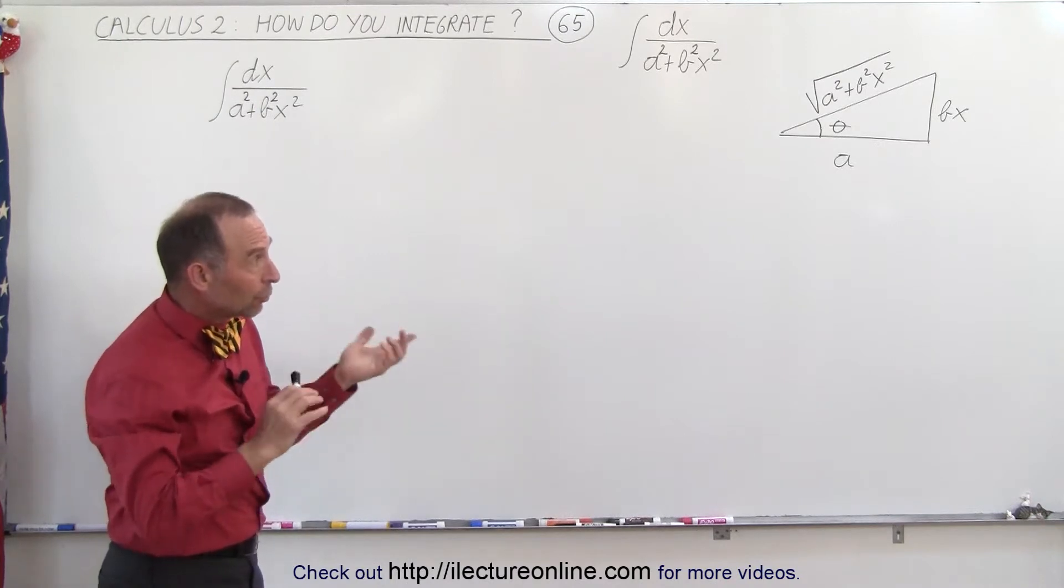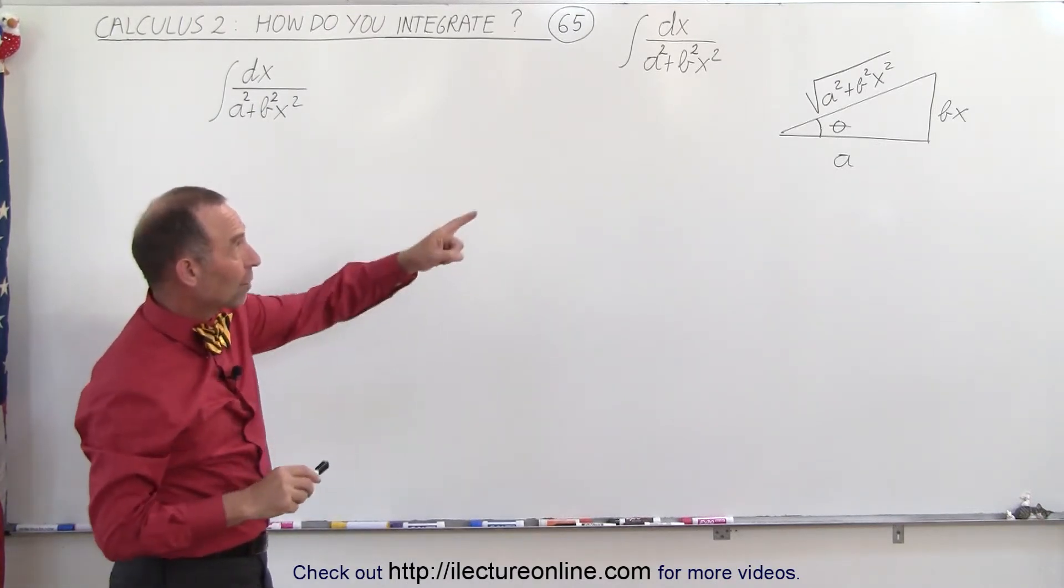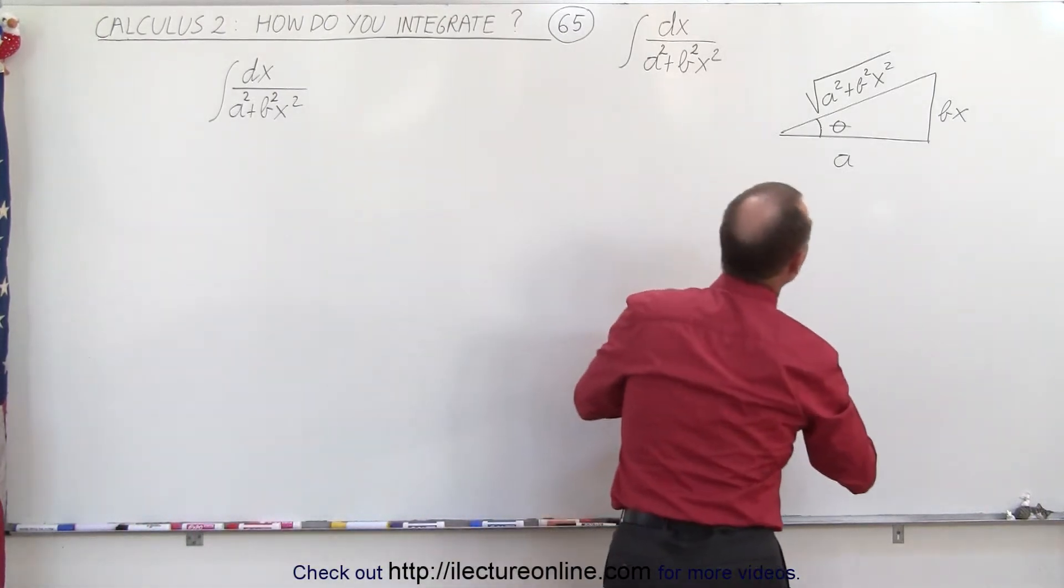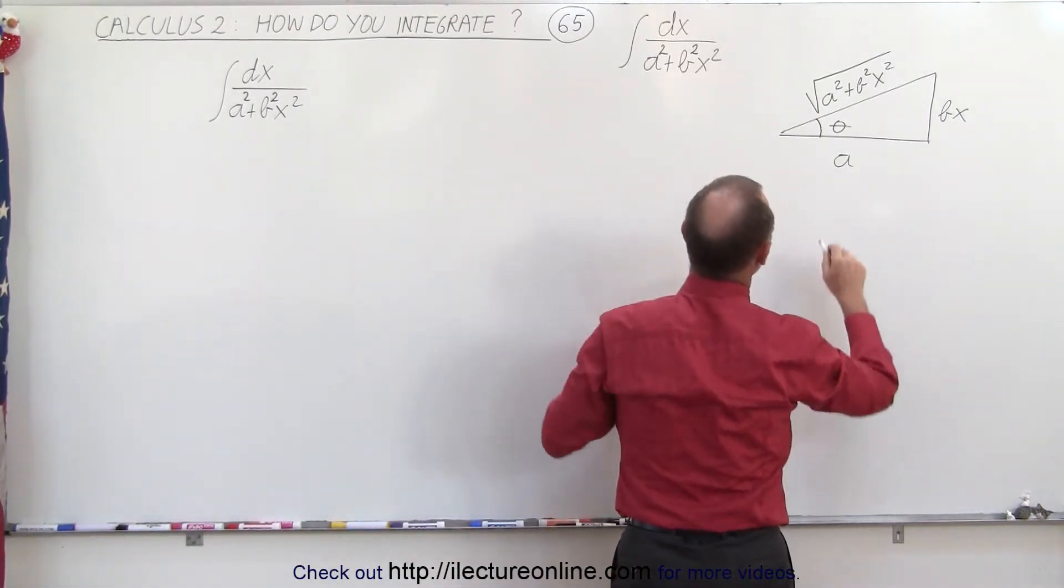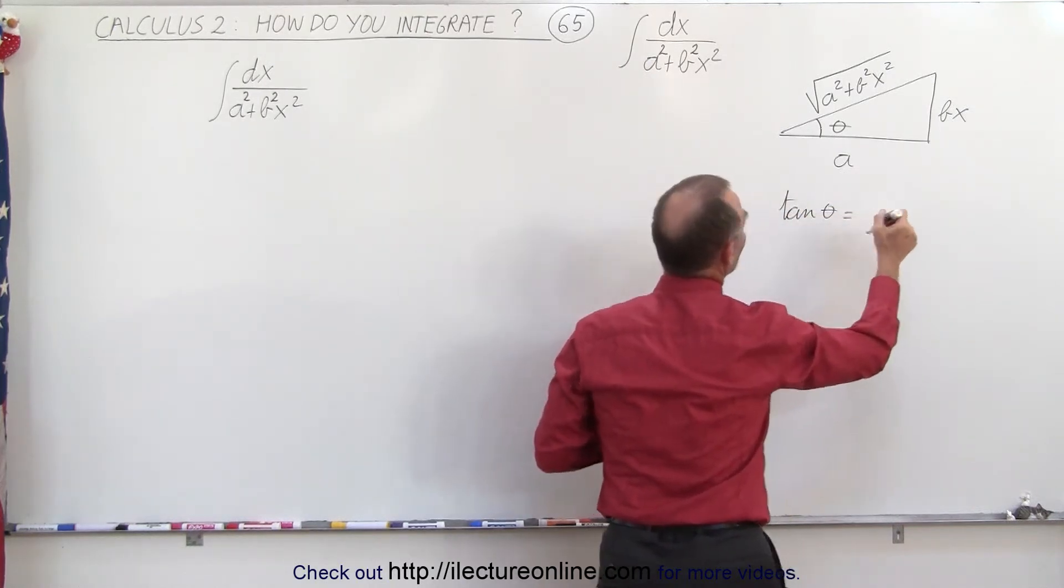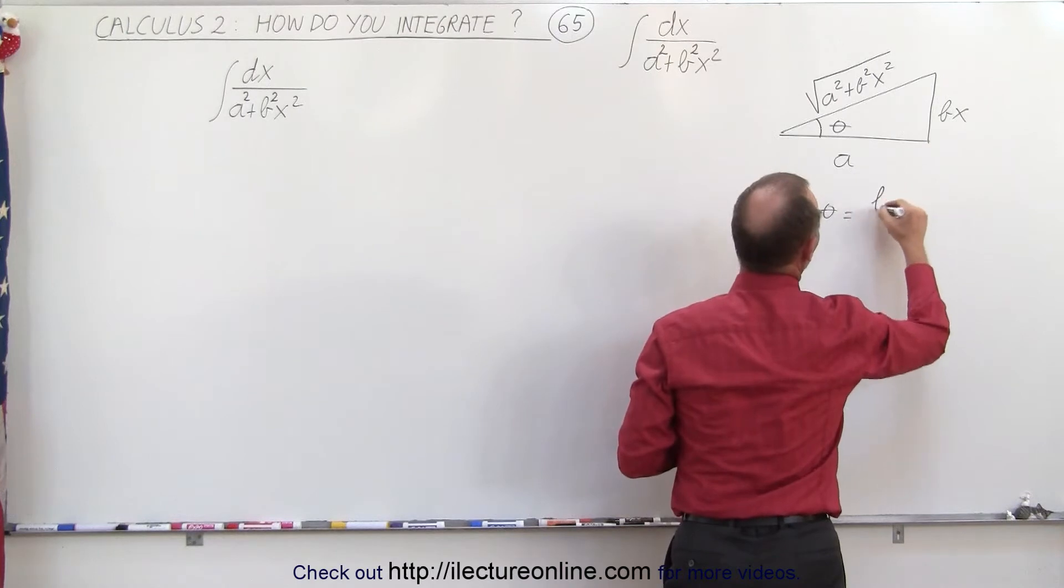So again, we're going to relate the angle to the sides and to the hypotenuse to try and make substitutions ready to integrate. And so what we can do here is say that the tangent of the angle theta is equal to the opposite side over the adjacent side.